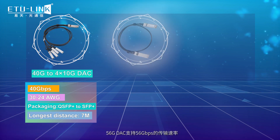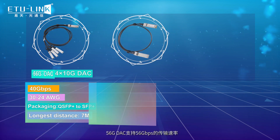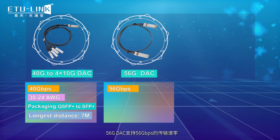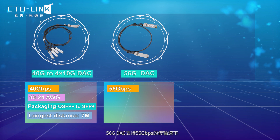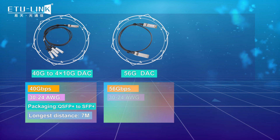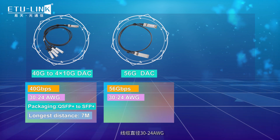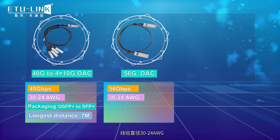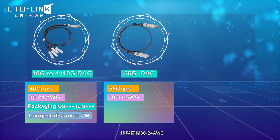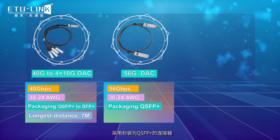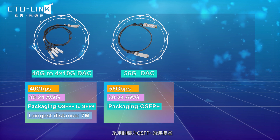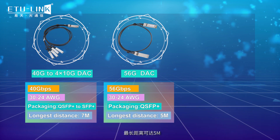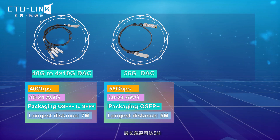The 56 Gb DAC supports a transmission rate of 56 Gb. The cable diameter is 30 to 24 AWG, the packing form is QSFP Plus, and the longest distance can reach 5 m.